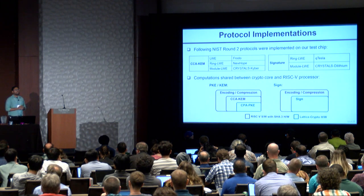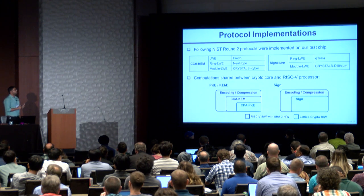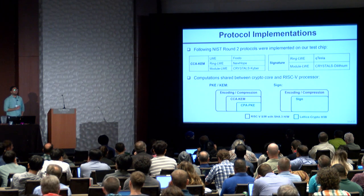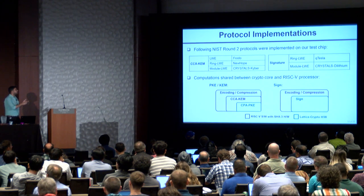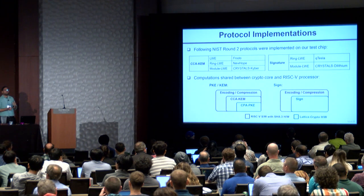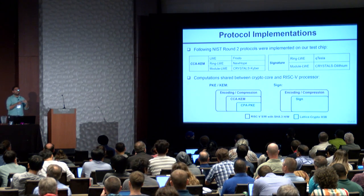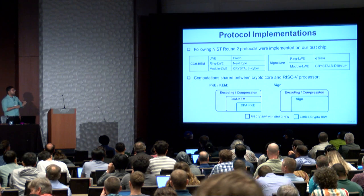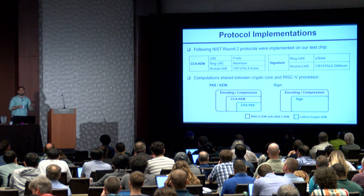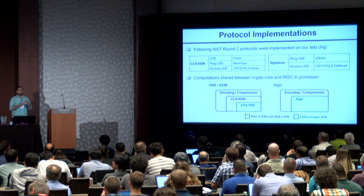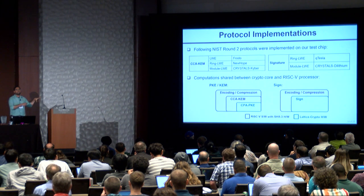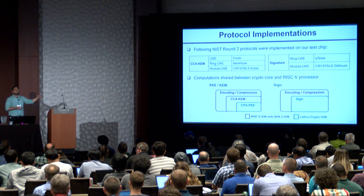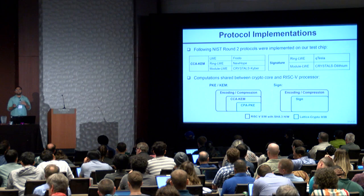To demonstrate the configurability of our chip, we have implemented three CCA-KEM schemes — Frodo, New Hope, and Kyber — and two signature schemes — qTESLA and Dilithium. The Sapphire crypto core accelerates all the cryptographic computations, and the RISC-V processor schedules these workloads and performs encoding, decoding, compression, and decompression of public keys and ciphertexts. The Keccak core inside our crypto processor can also be accessed standalone, so when the RISC-V processor performs hashing or random oracle operations for the CCA transformation, it still benefits from hardware-accelerated Keccak. While the crypto operation is happening inside the Sapphire core, we can clock gate the RISC-V processor using the wait-for-interrupt instruction to provide additional power savings.